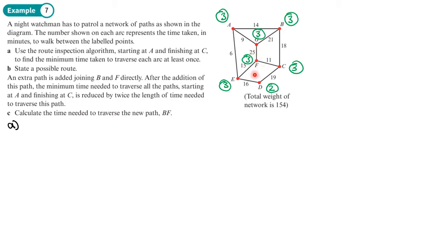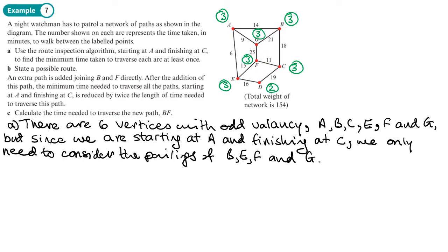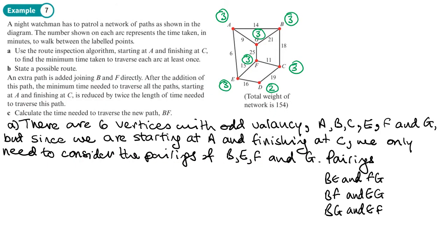So we're going to write that down in words. We can see that there are six vertices of odd valency: A, B, C, E, F, and G. But since we are starting at A and finishing at C, we only need to consider the pairings of B, E, F, and G. So let's write those three pairings down and work out the weight of each pairing, then pick the pairing with the lowest weight.